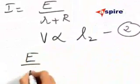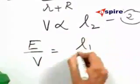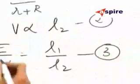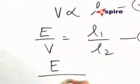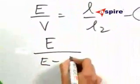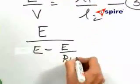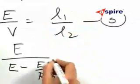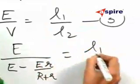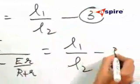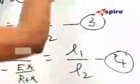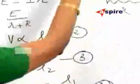What is E by V equal to L1 by L2? Substitute for V: E by E minus E by R plus r into R, that is equal to L1 by L2, which can be simplified to give small r.